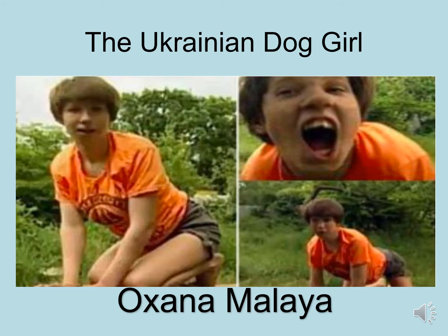We use an example in sociology called the Ukrainian dog girl — Oxana Malaya — as an example of someone who had no socialisation growing up. She had no parents telling her right from wrong, no education, and no socialisation from her family. She grew up with a pack of dogs and so she started acting like one. This is a prime example of what happens if you don't have society around you, and a great example of why society is important in shaping who we all are.